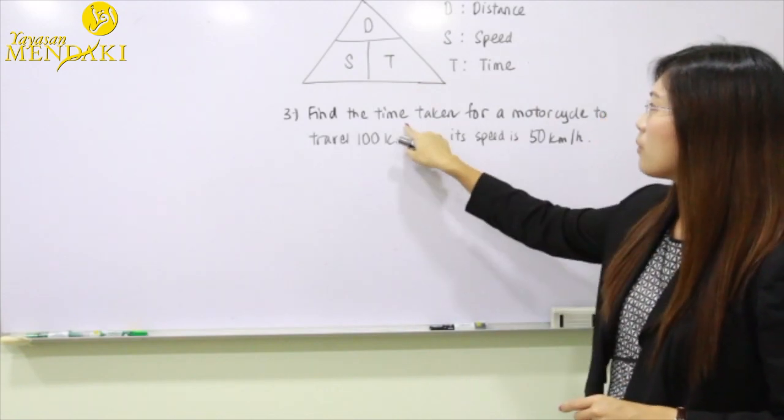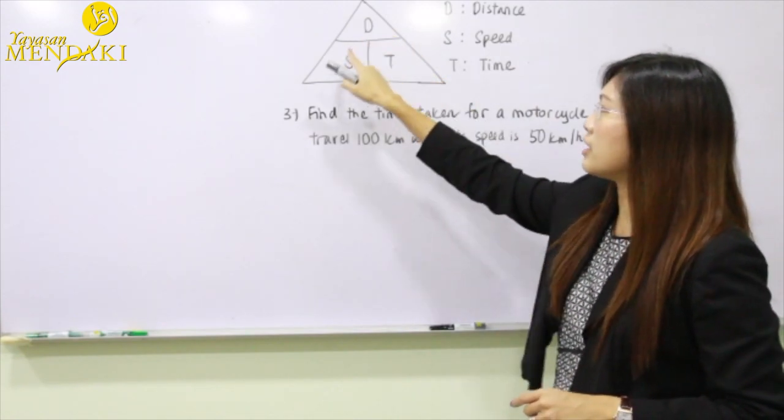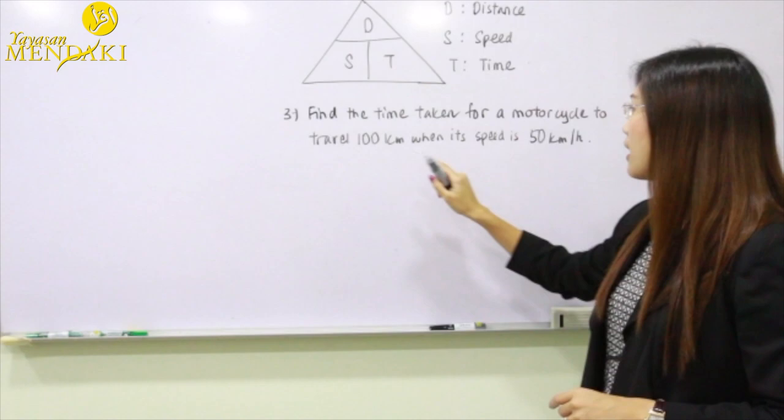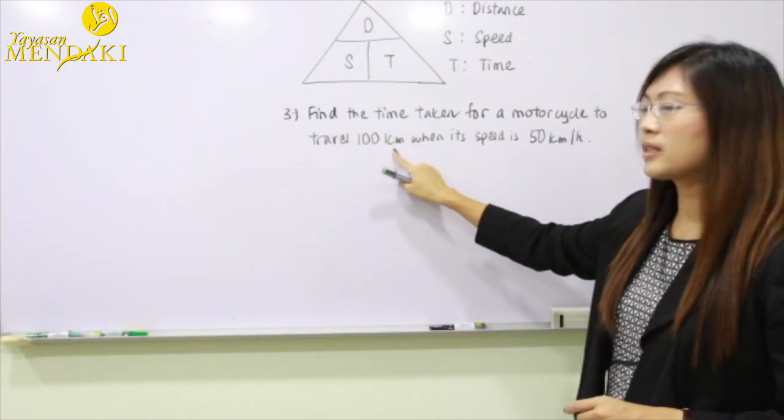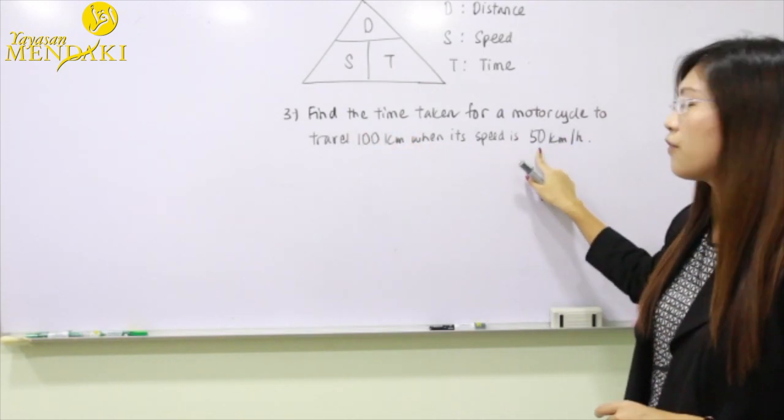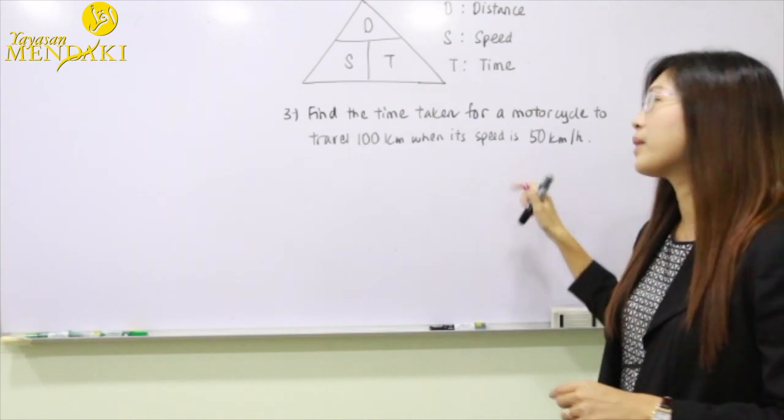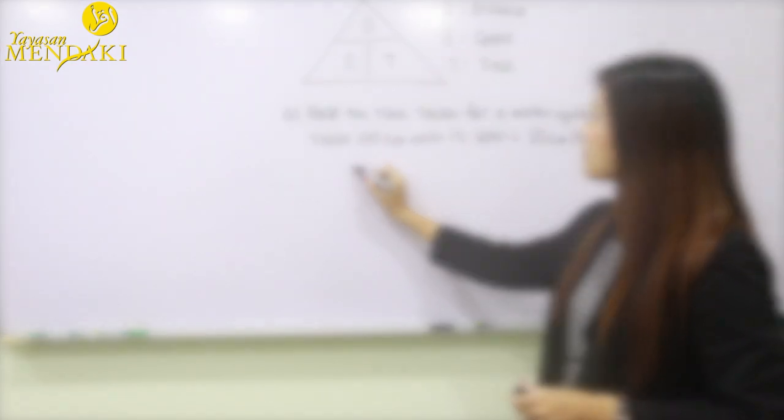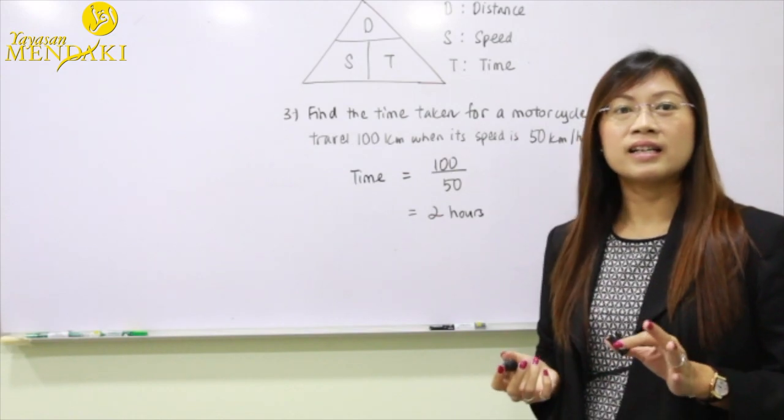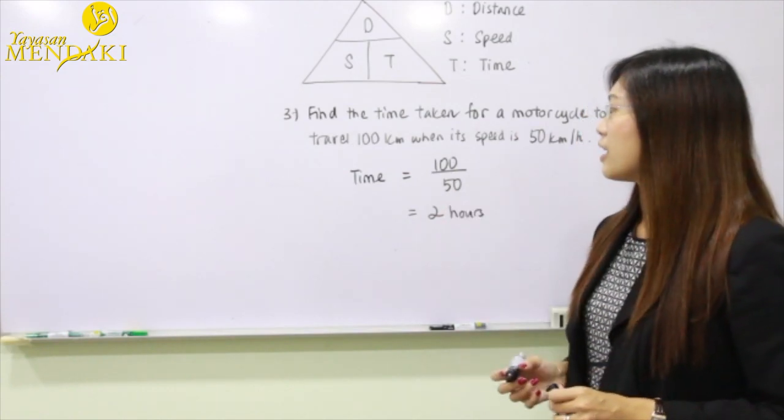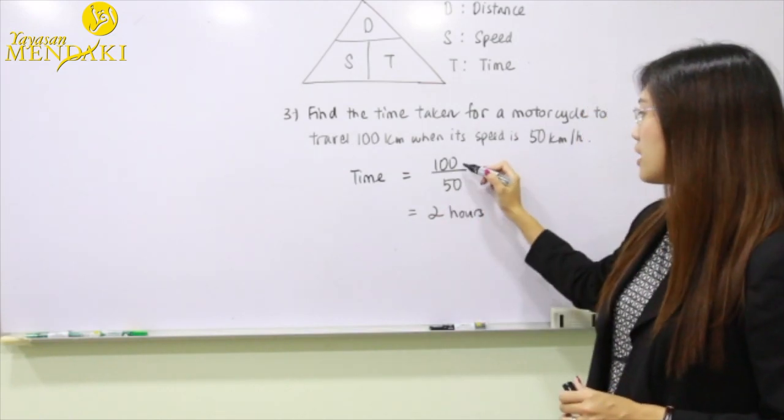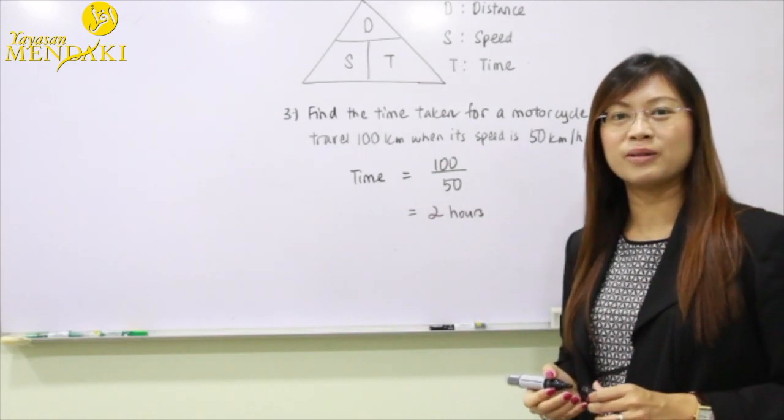In order to find the time, we have to take the distance divided by the speed. We're going to take the distance of 100 km and divide by the speed of 50 km per hour. Hence, the time taken for this journey will be 100 divided by 50, and that gets you to two hours.